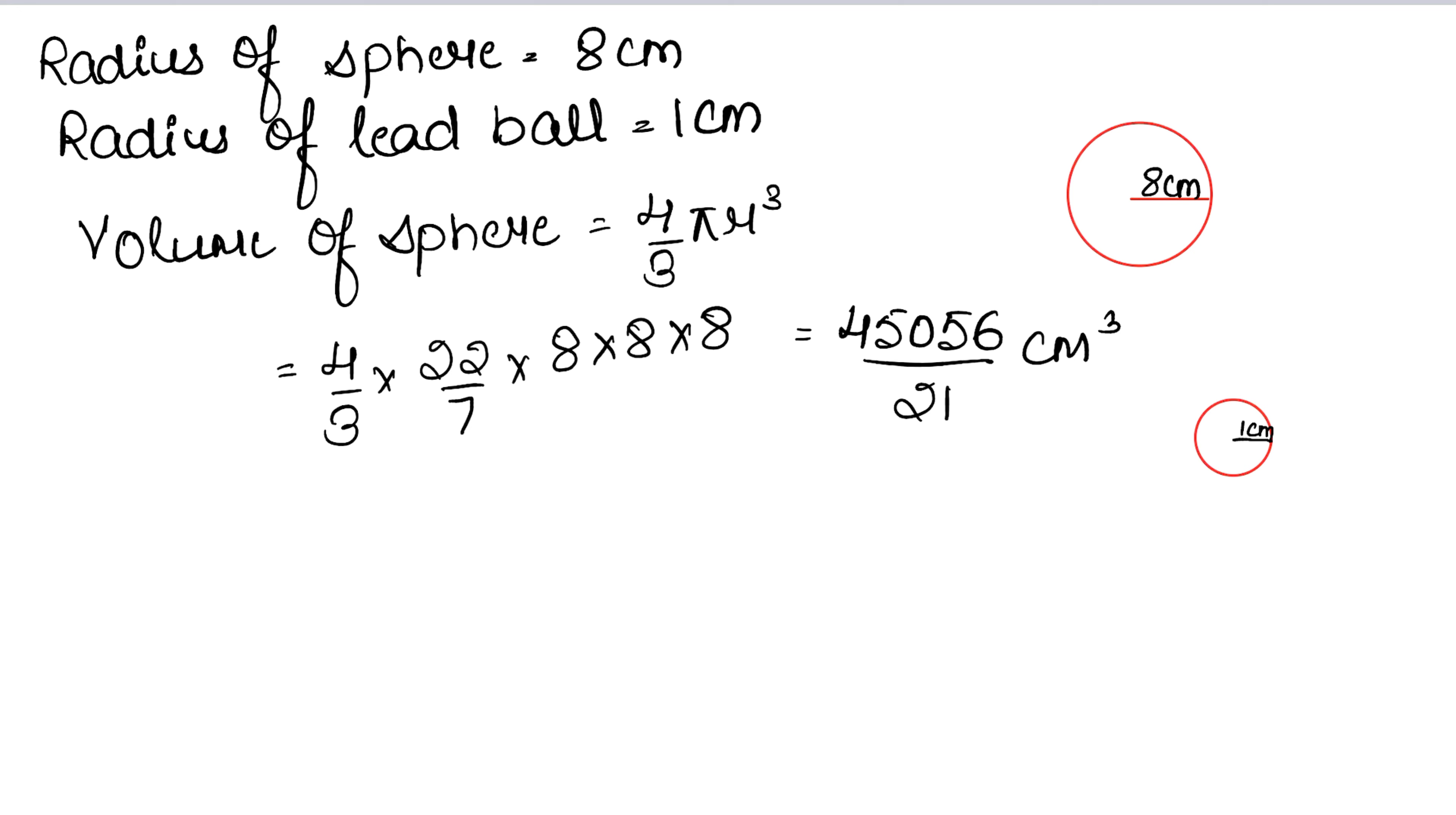Now we'll find the volume of the lead ball. Volume of one lead ball. It's also in the shape of a sphere, so we'll use the sphere formula. That is 4 upon 3, pi ki value 22 upon 7, r is 1. Nothing is getting cancelled, so we multiply as it is. This gives 88 upon 21 cm cube.